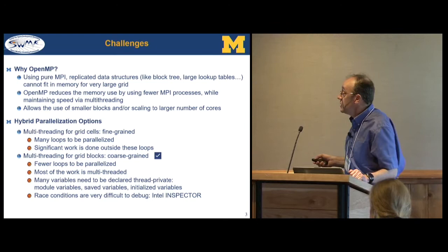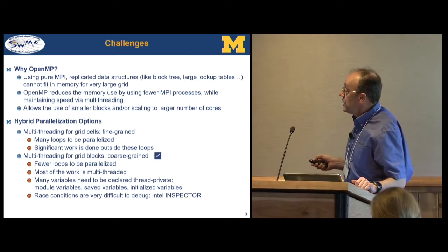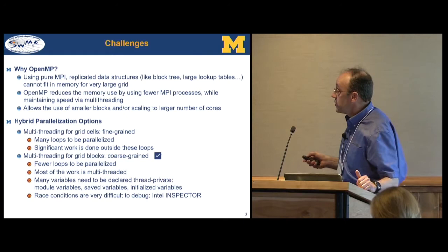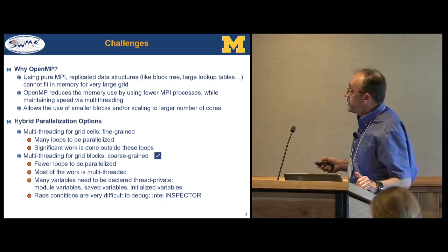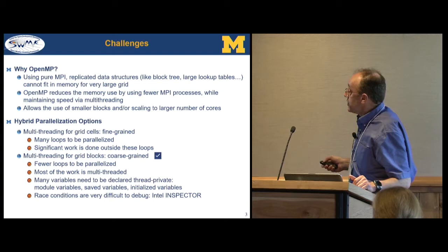Why did we choose OpenMP? Because we have some memory usage which is replicated — the grid structure — so if you have a really large grid, this tree is already going to use most of the memory and we cannot scale beyond a certain number of cores. We can also have lookup tables which are static information; there's no point repeating them for each MPI process on the same node. If we use OpenMP, we will have fewer MPI processes and use the cores by multithreading, allowing smaller blocks, essentially larger trees, or scaling to a larger number of cores without losing too much speed.